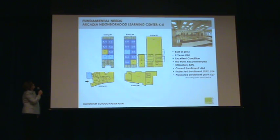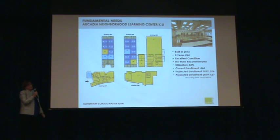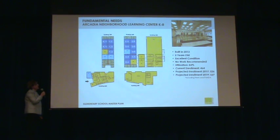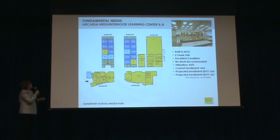Our next one is the K-DU Neighborhood Learning Center, a K-8 built in 2013. It's only two years old, so it's in excellent condition — no work is recommended for obvious reasons. Utilization is 83%. The current enrollment is 464 as of November 2014. Projected enrollment for 2017 is 526, and for 2019 is 527. You can see it went up a little bit, and it has only a few light-blue areas, which is why the utilization is a little higher.